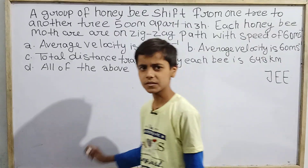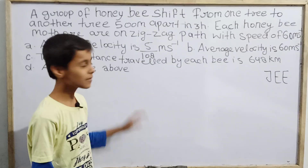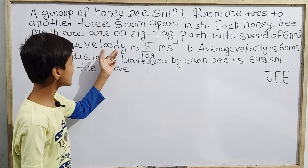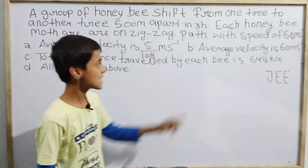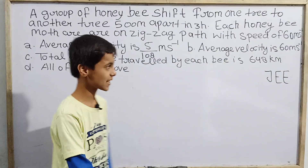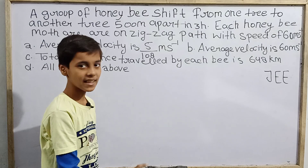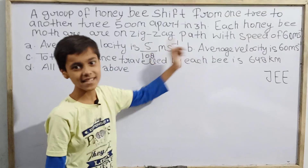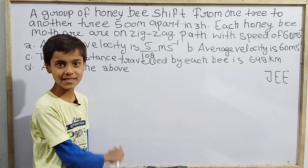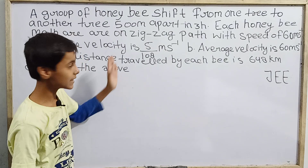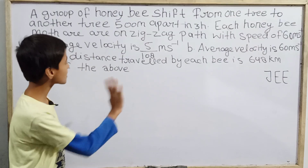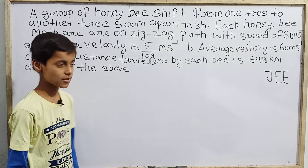Option D says all of the above, but we can already tell that can't be correct — because options A and B give different values for average velocity. If one is correct, the other cannot be. So let's solve the problem step by step and determine which options are actually correct.